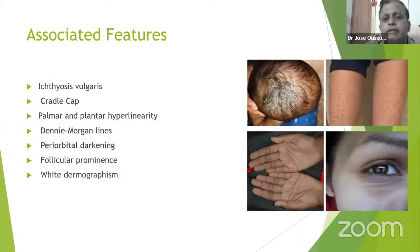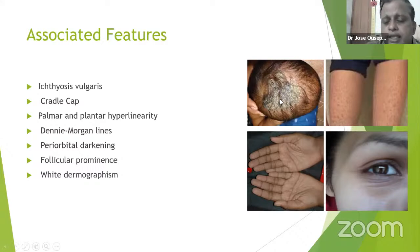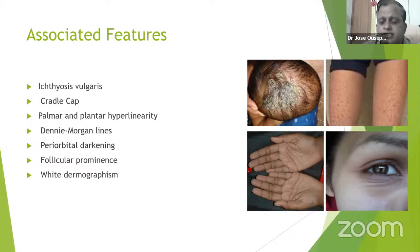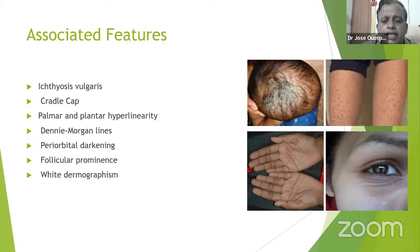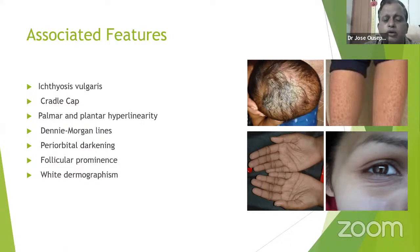Atopic Dermatitis may be associated with features like ichthyosis vulgaris or cradle cap. Persistence of diffuse cradle cap should raise suspicion of Atopic Dermatitis. Other associated features include palmar hyperlinearity, Dennie-Morgan fold, periorbital darkening, follicular prominence, and dermographism — all co-associated features in a child with Atopic Dermatitis.